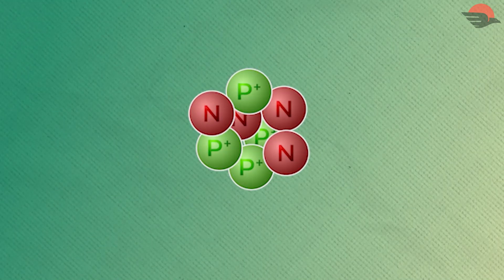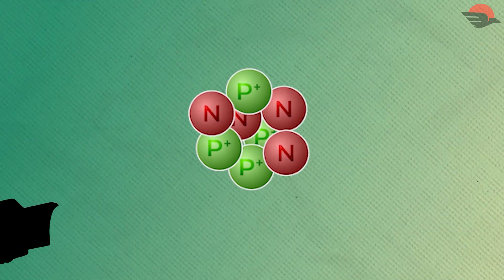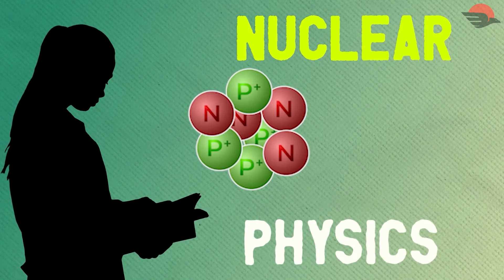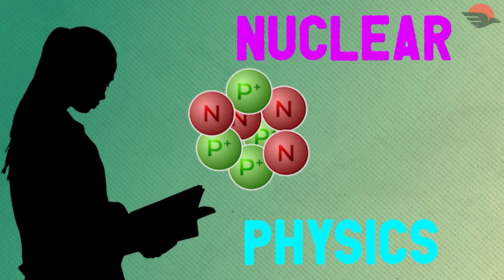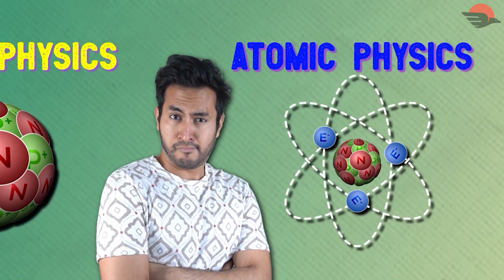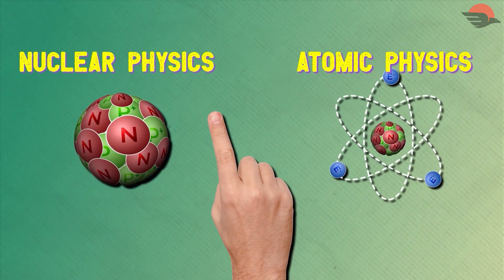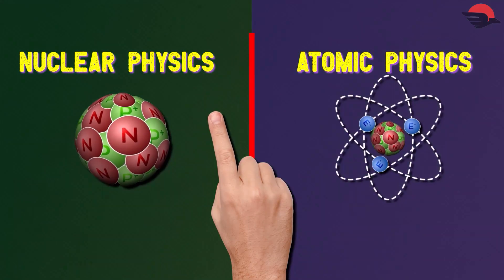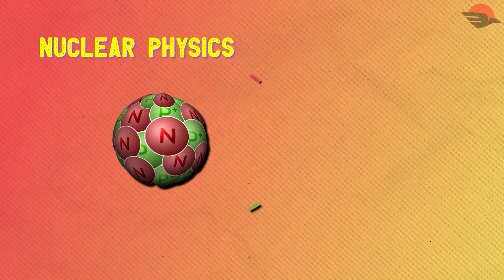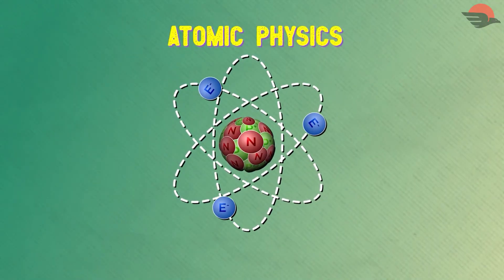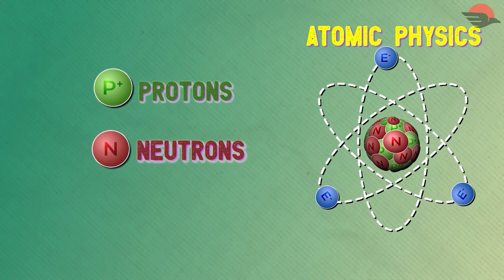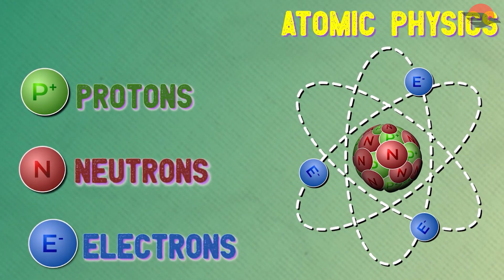Nucleus study of protons and neutrons means nuclear physics. Nuclear physics? You mean atomic physics. Actually, no — both are quite different. Nuclear physics has got protons and neutrons, but atomic physics has got protons and neutrons and electrons.